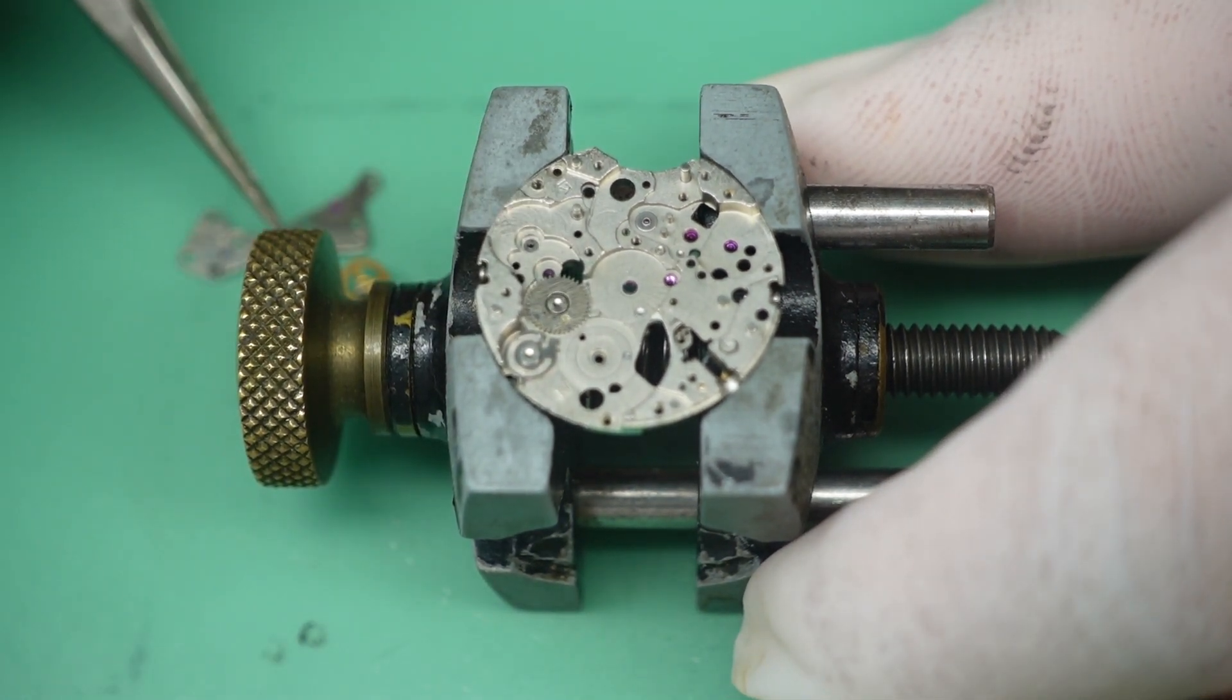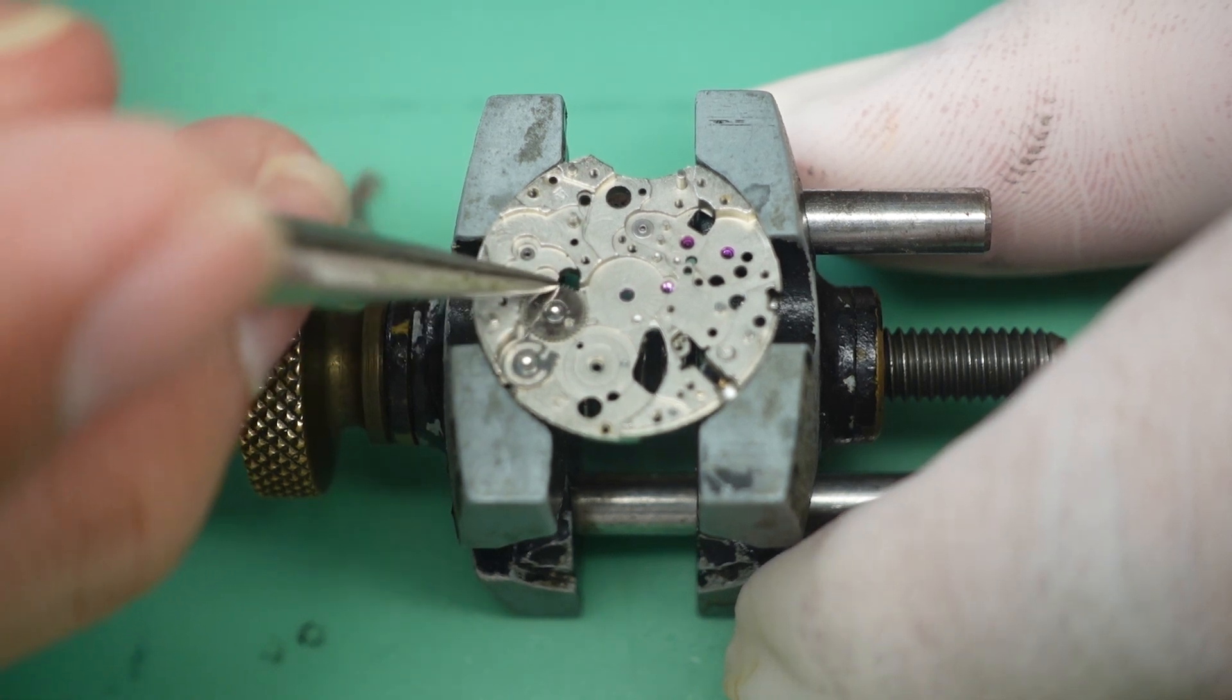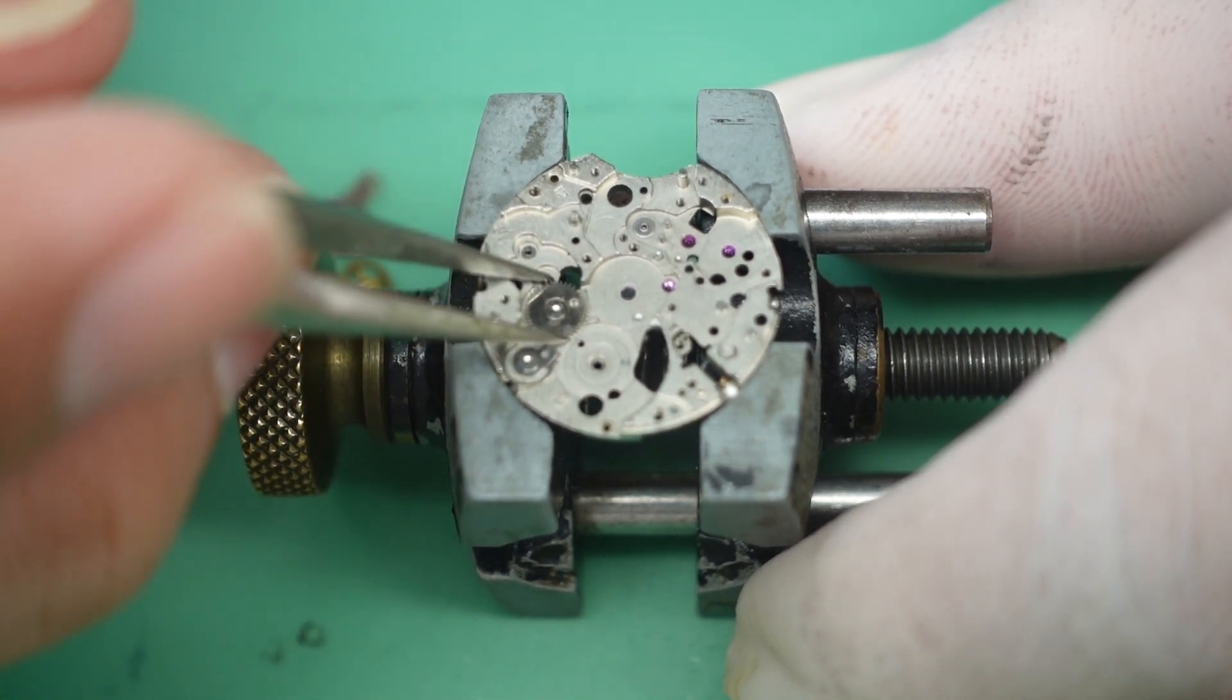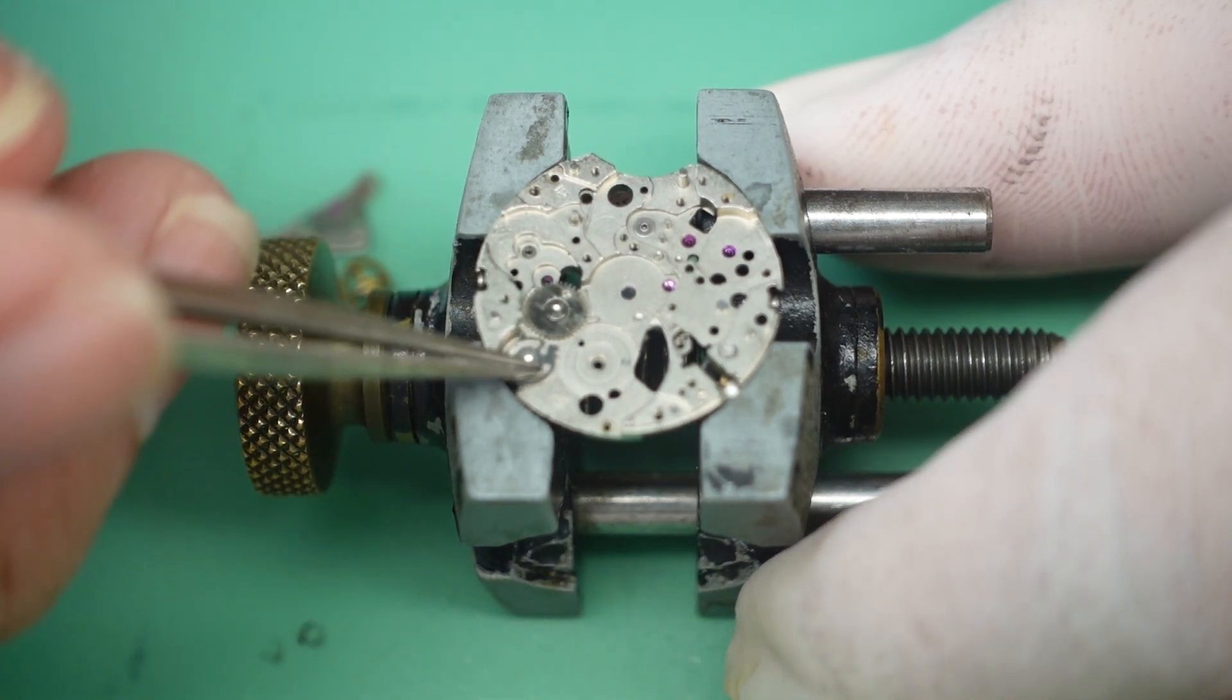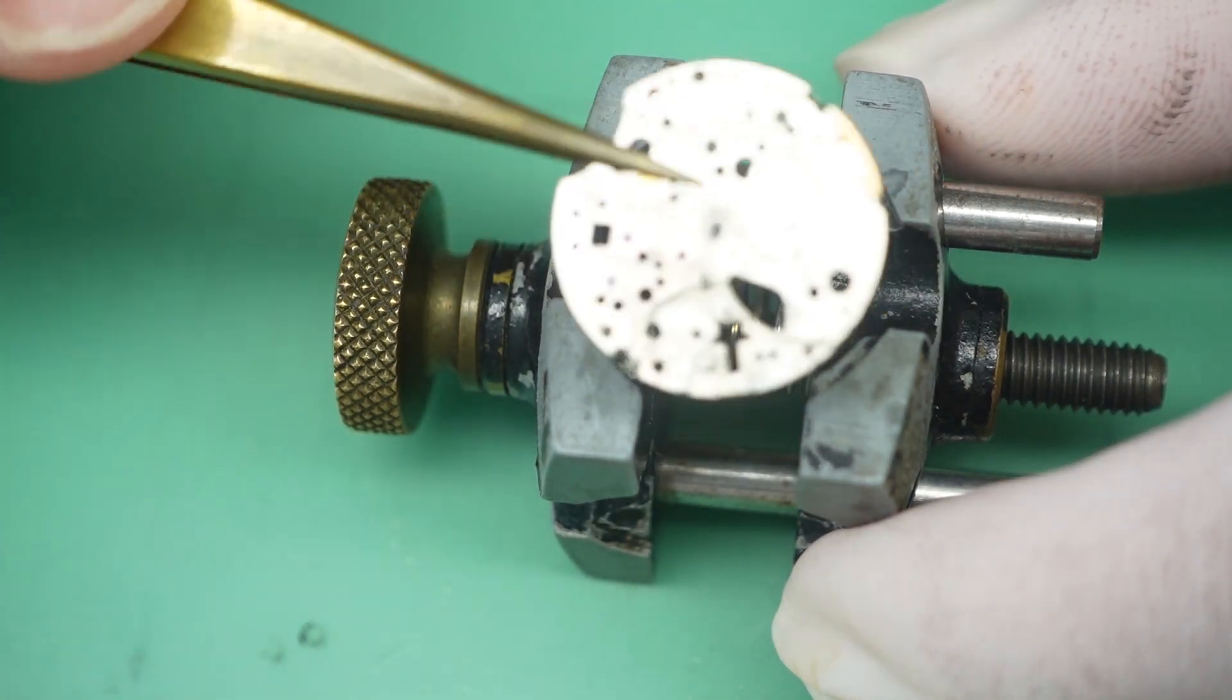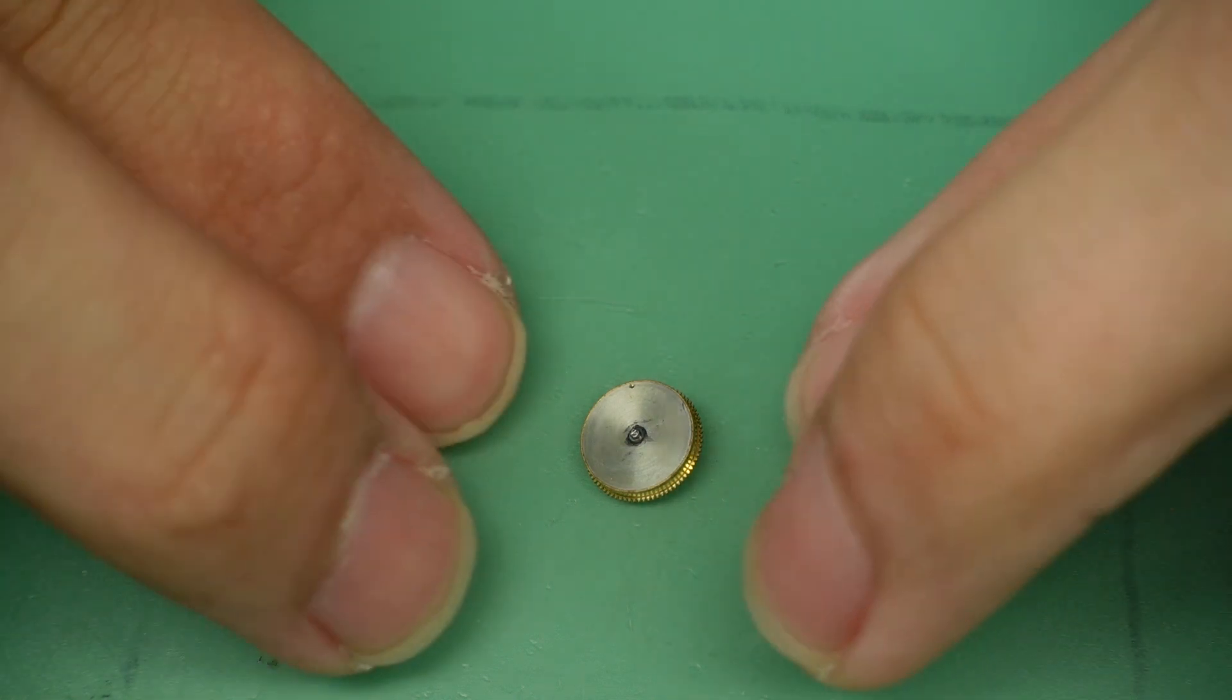You can see this is the spring. The same, the mainspring. The diameter of the mainspring is the same as a coil I believe. The barrel.